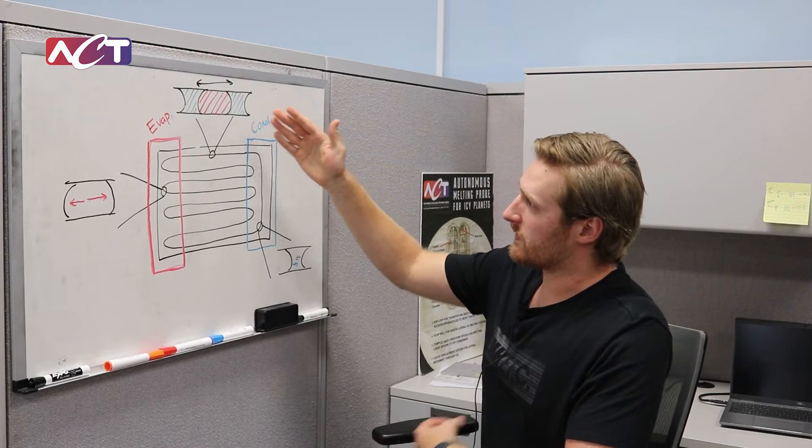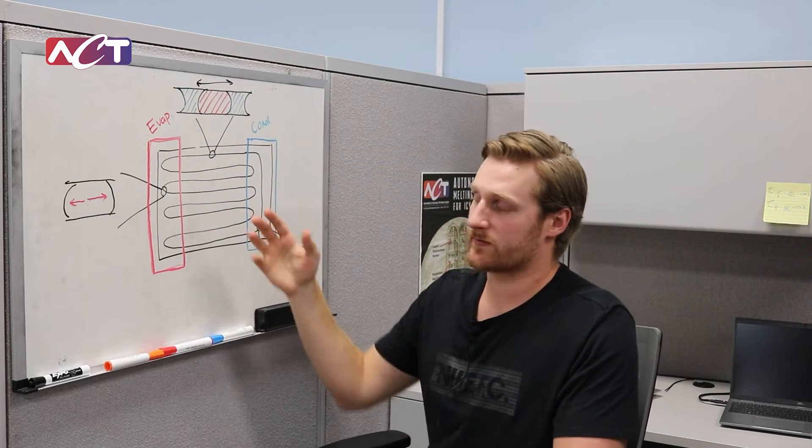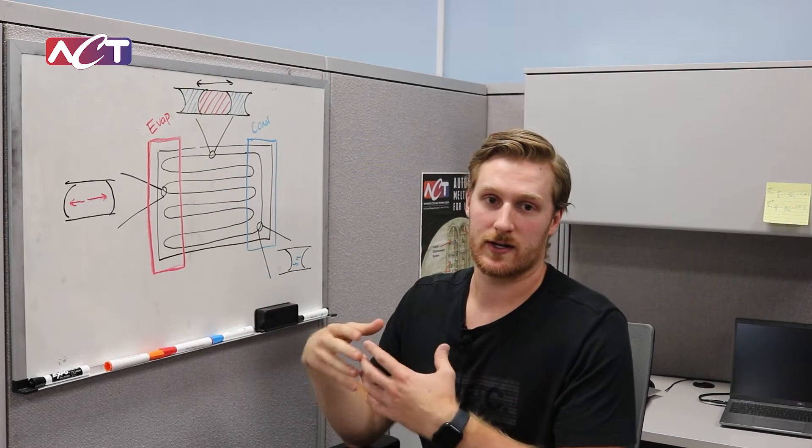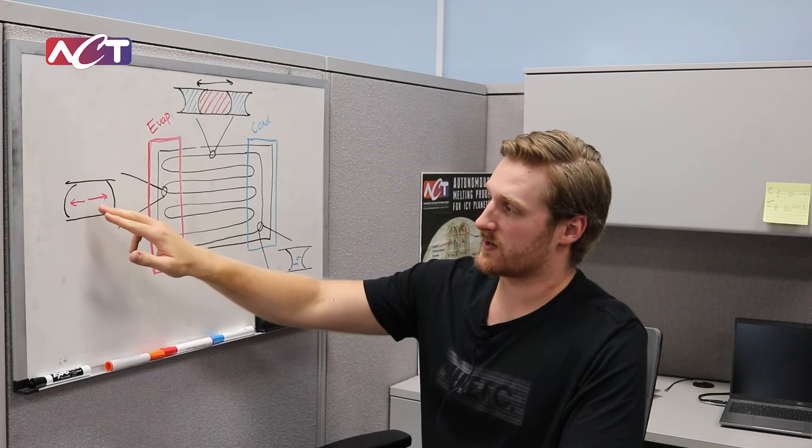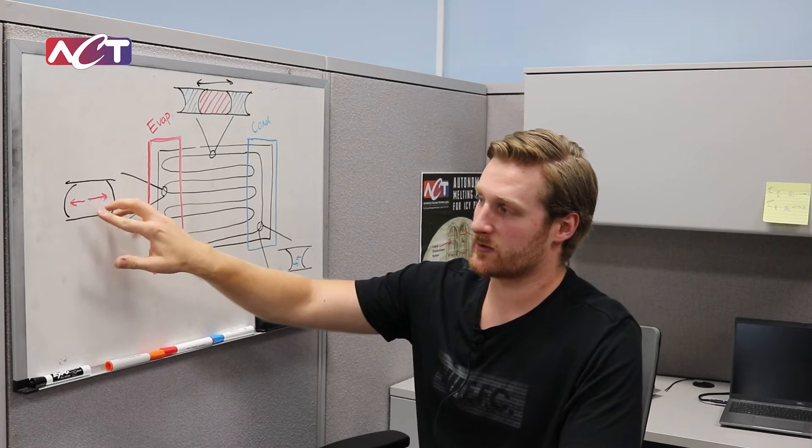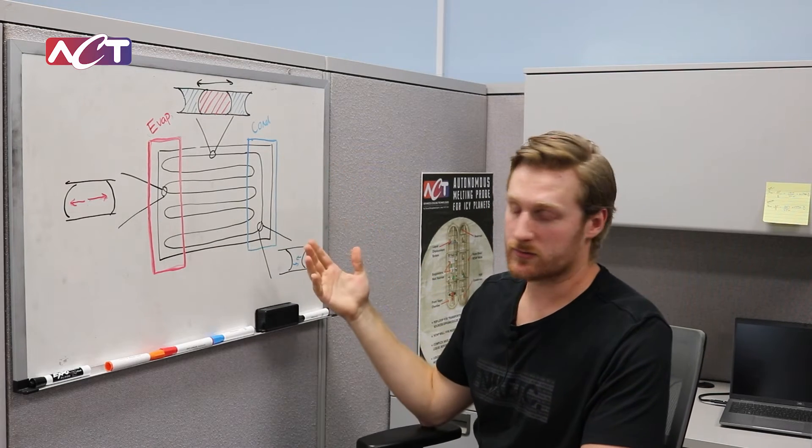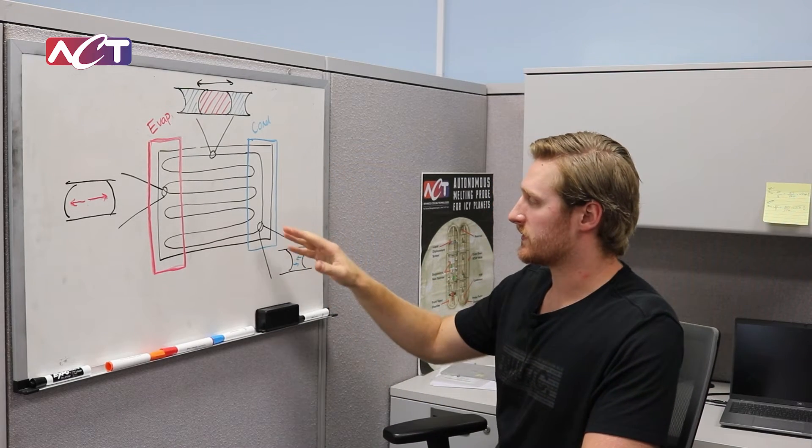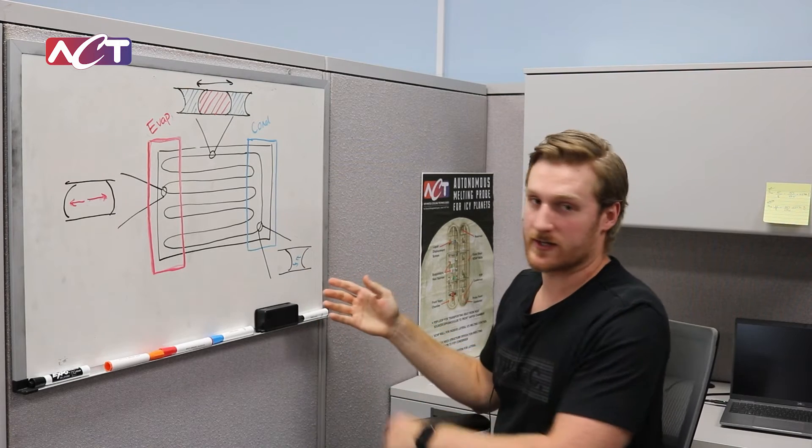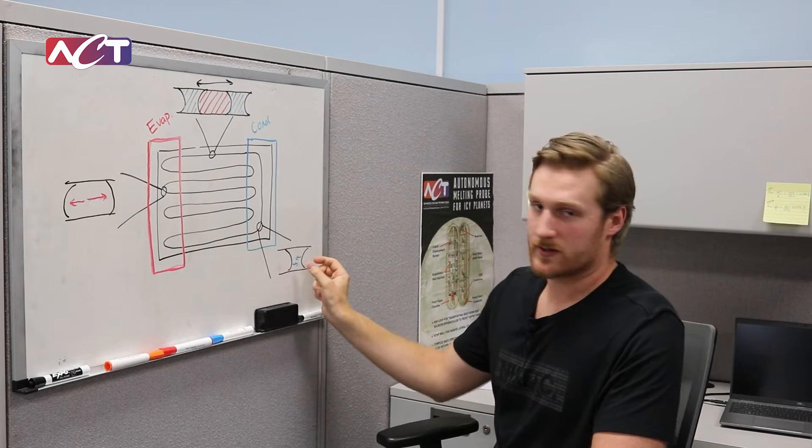On the evaporator side we have the working fluid that is getting evaporated and turning into a vapor. As that fluid turns into a vapor the volume expands here, and then on the condenser side where we're applying cooling, the fluid which is in a vapor form then condenses into the liquid so the volume contracts.